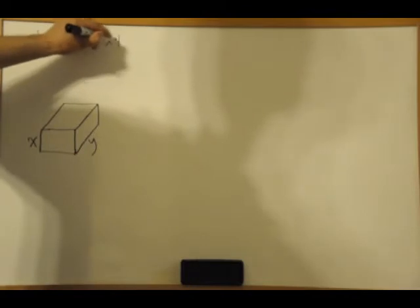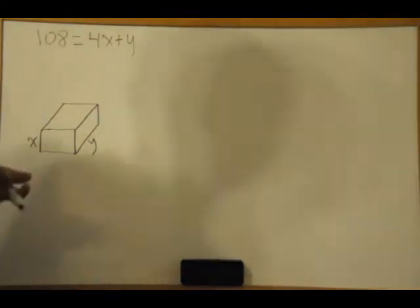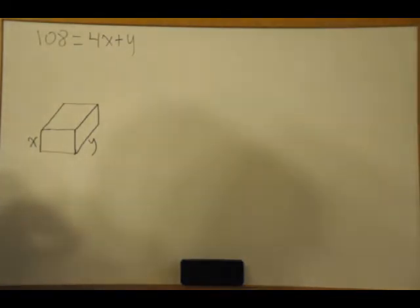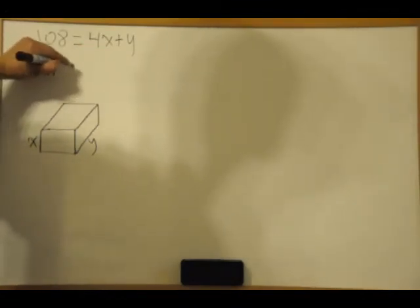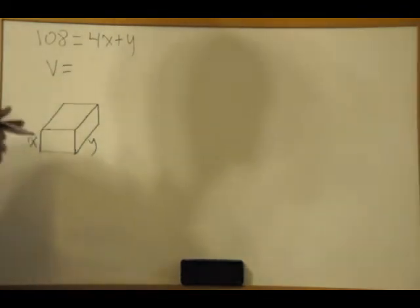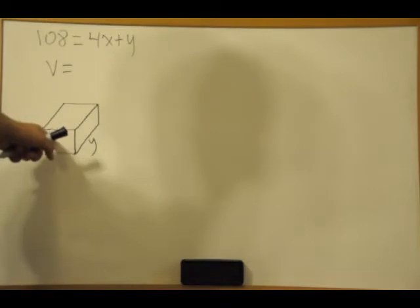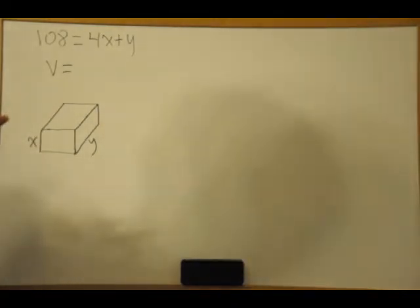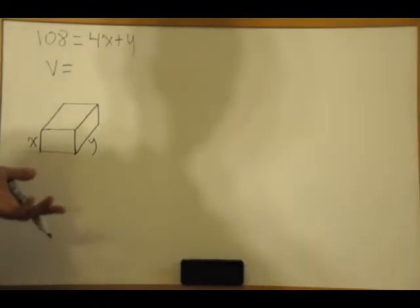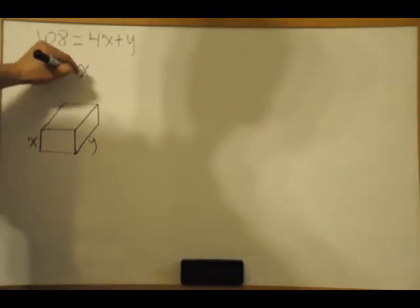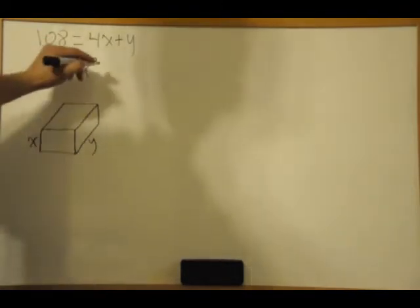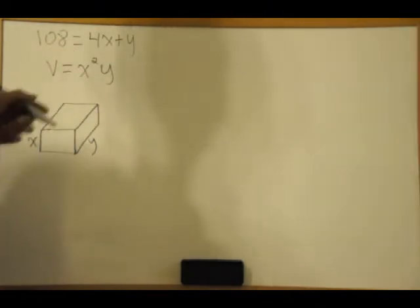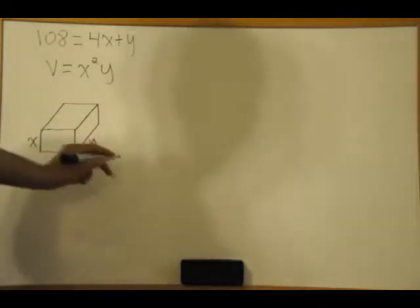The volume of this box - we're going to take the area of the base and multiply by the height. That would be x squared because the base is x times x, times y the height.